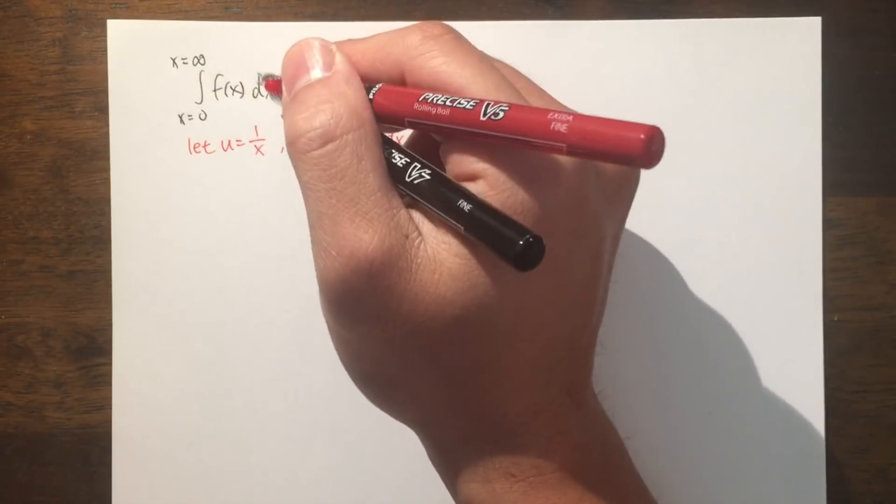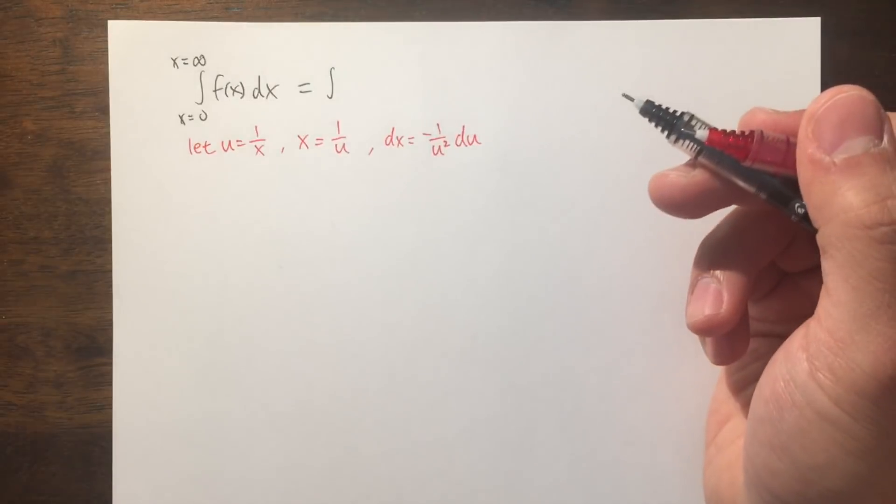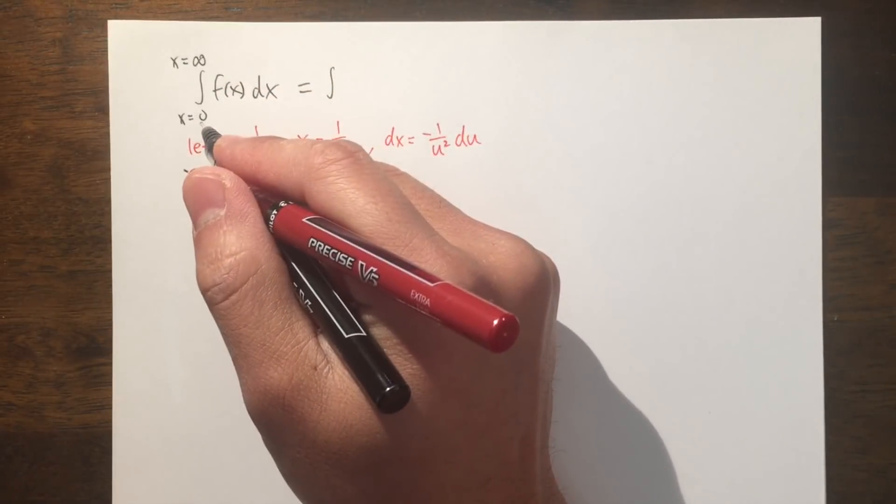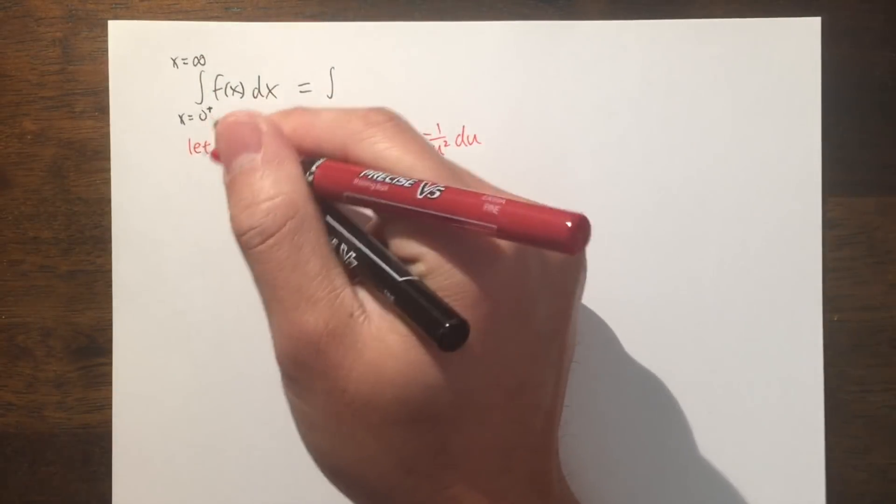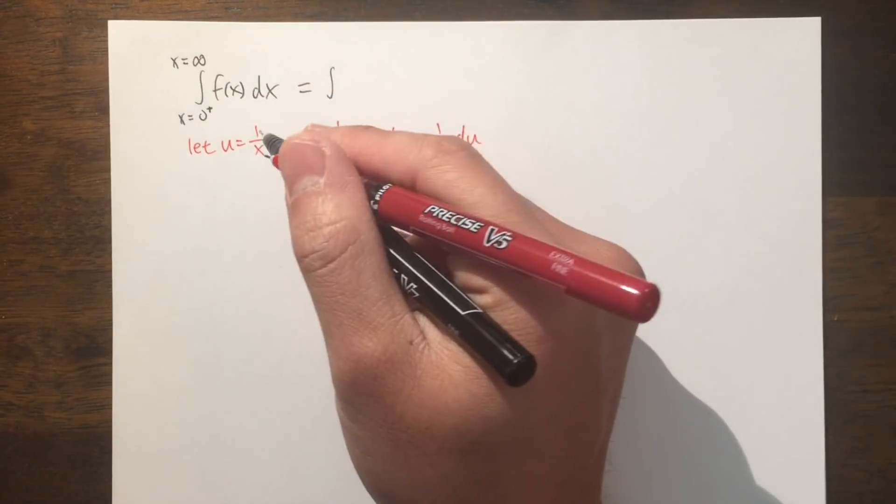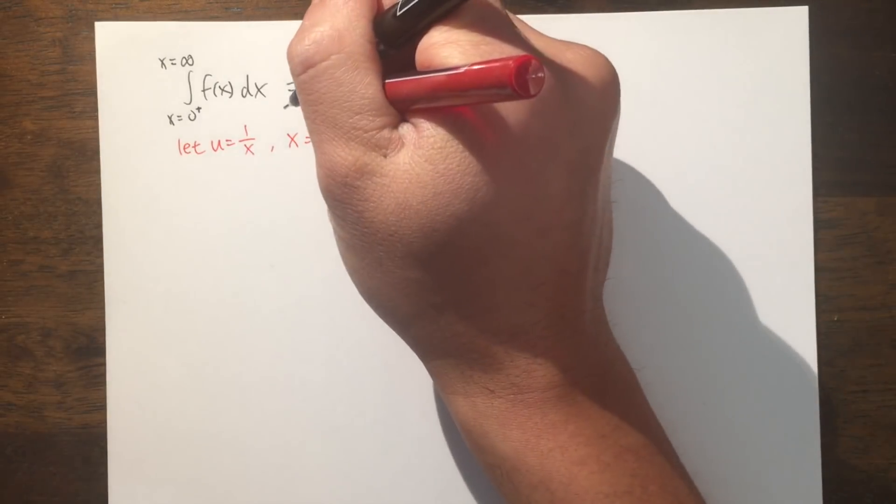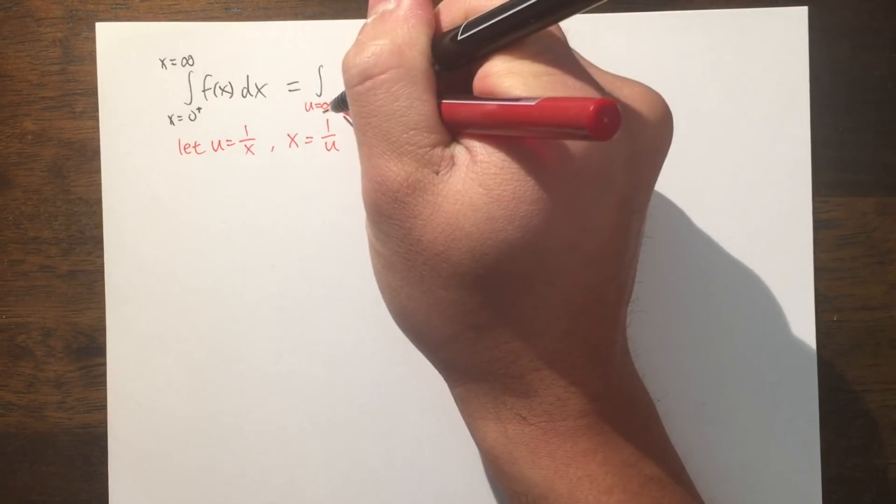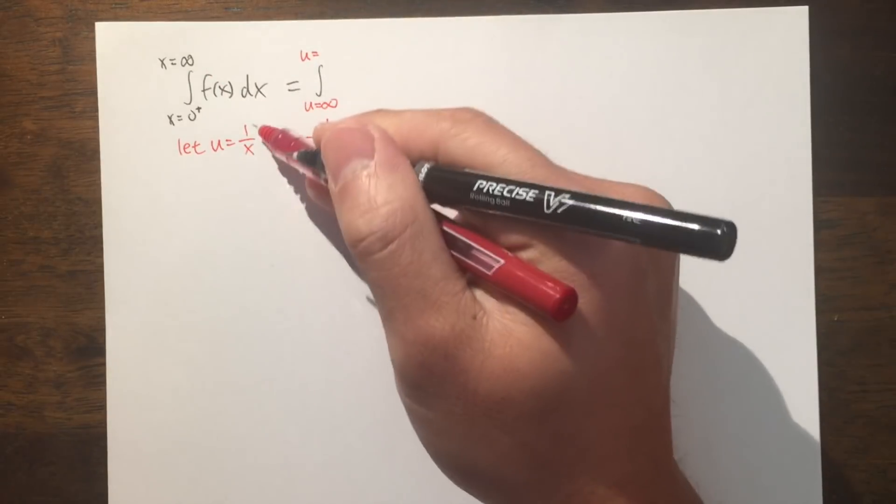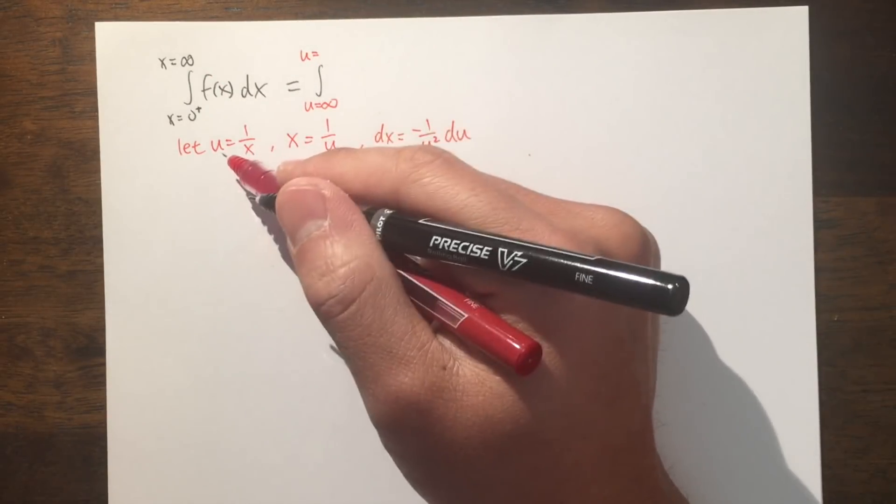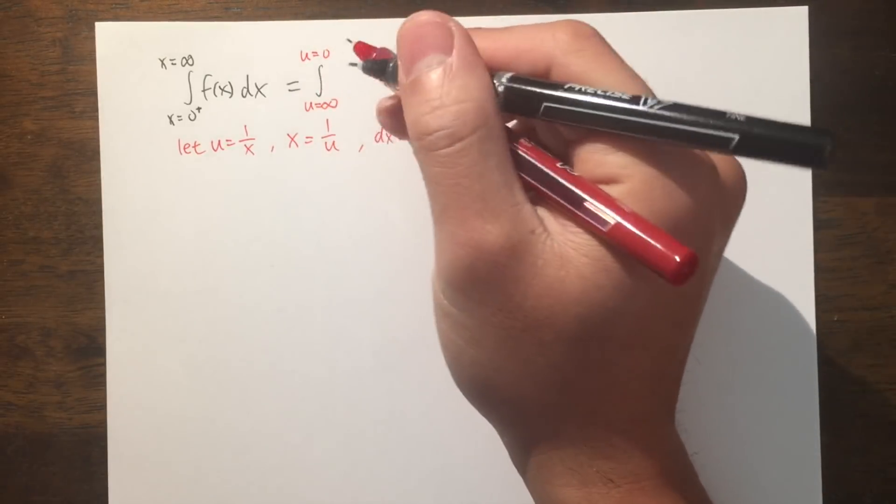Now I'll take this integral from the x world to the u world. Be sure to change the limits of integration as well. When x equals 0, technically we're saying x equals 0 plus. When you plug in 0 plus here, 1 over 0 plus is positive infinity, and that will be for u. So u goes from positive infinity up to—when you plug in infinity here, 1 over infinity is 0. So that will be the upper limit for this integral, u equals 0.